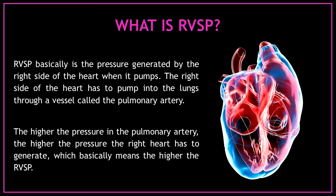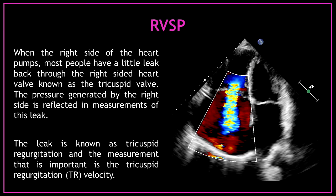The right ventricular systolic pressure is the pressure generated by the right side of the heart when it pumps. The right side of the heart has to pump into the lungs through a vessel called the pulmonary artery. The higher the pressure in the pulmonary artery, the higher the pressure the right heart has to generate, which basically means the higher the right ventricular systolic pressure. When the right side of the heart pumps, most people have a little leak back through the right-sided heart valve known as the tricuspid valve. The pressure generated by the right side is reflected in measurements of this leak, known as tricuspid regurgitation.